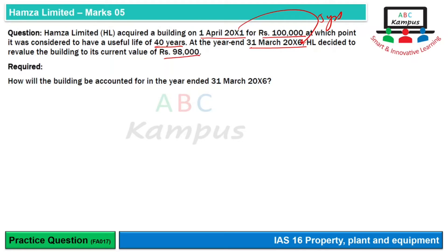Requirement hai ke how will the building be accounted for in the year ended 31st March 2006? Year end par revaluation hui hai — yeh humara ek important concept hoga. Ab agar iski calculation hum banate hain, to sabse pehle hum value le lete hain ki humne isko liya kitne ka tha — 100,000 ka.